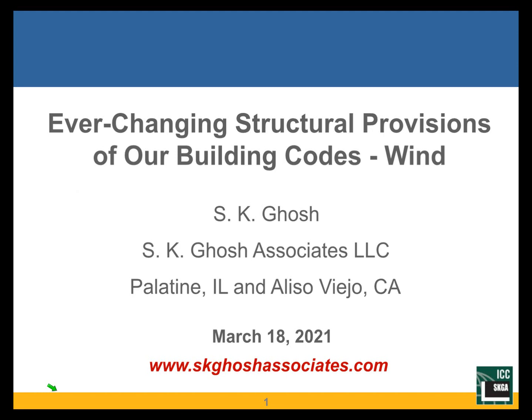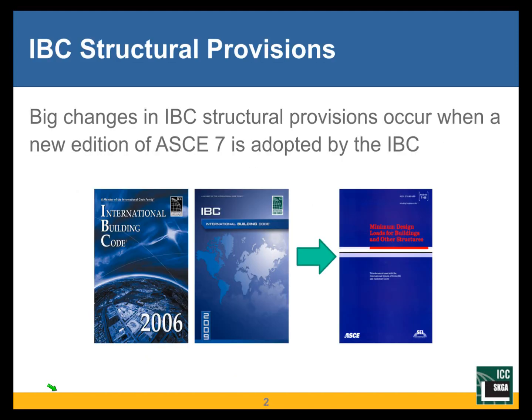We are going to talk in particular today about the wind design provisions. The first point I wanted to make: all of you realize by now that the structural provisions of the IBC are basically all by reference to standards. The load provisions and design provisions in Chapter 16 are by reference to ASCE 7, Minimum Design Loads and Associated Criteria for Buildings and Structures.